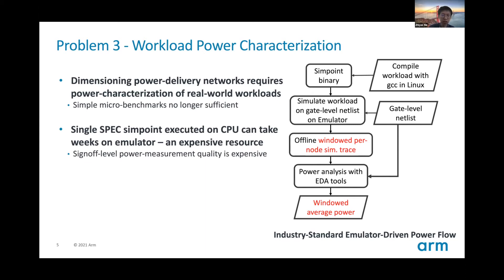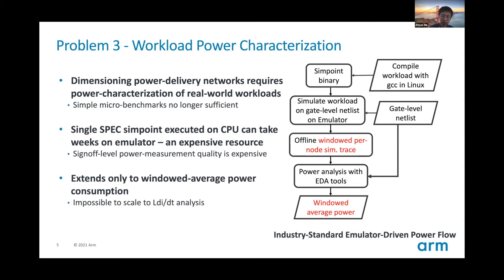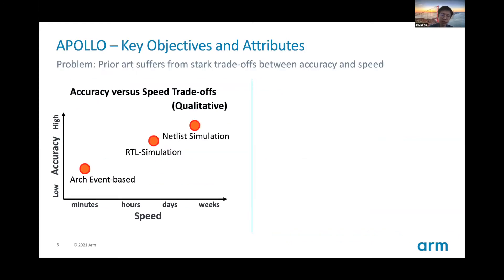In industry, this is often done by using an emulator to emulate the IR-drop analysis. However, the emulator is expensive and this flow can take up to two weeks. In addition, this only gives us the average power consumption over millions of cycles, and does not scale to the analysis of the aforementioned dI/dt events because of its limited temporal resolution. So Apollo was essentially motivated to address all three of these problems. As this figure shows, existing power modeling solutions present a stark trade-off between accuracy and speed. Apollo's objective is to bridge this gap — reasonably accurate power can be obtained in minutes instead of weeks.